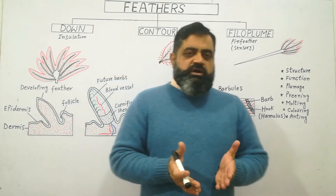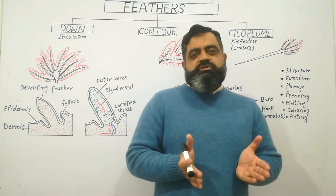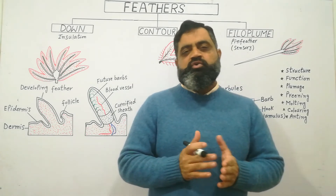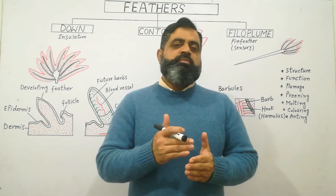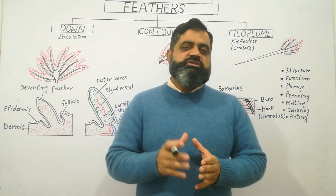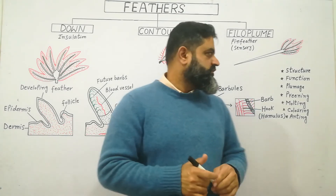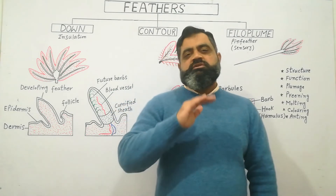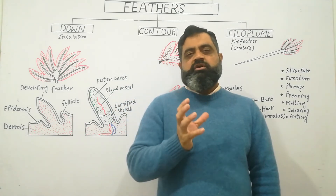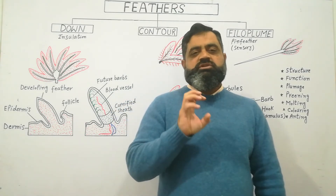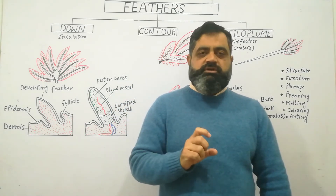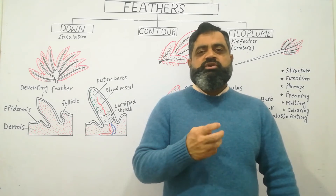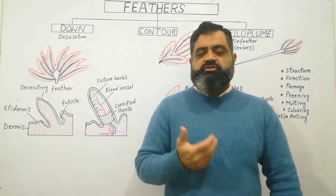Now we are going to discuss some more important terminology related to feathers. The first term is plumage — the whole covering of feathers on the surface of a bird's skin is known as plumage. Plumage includes different types of feathers on the body of birds.